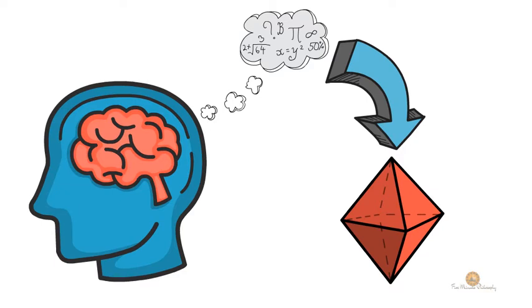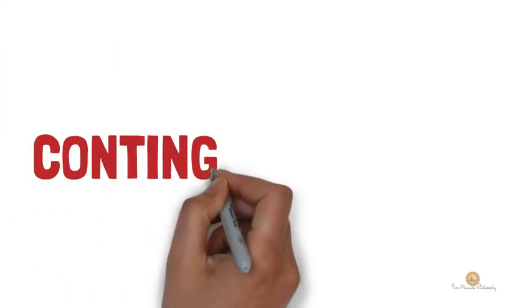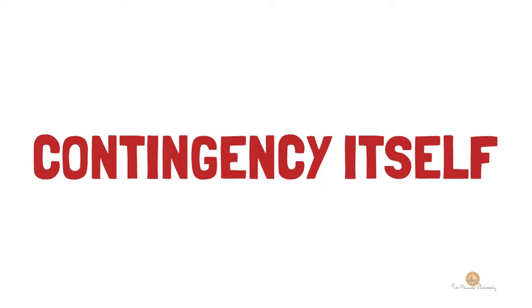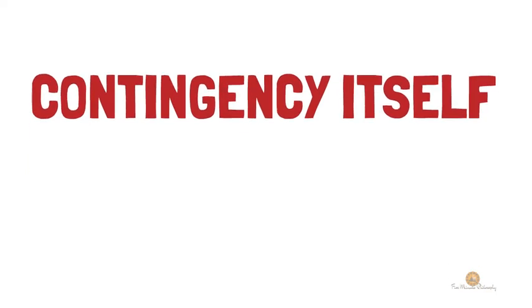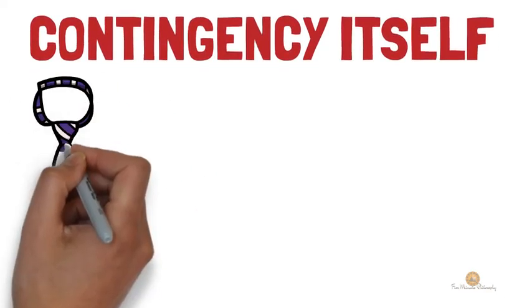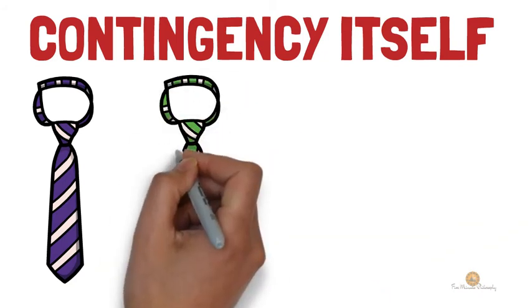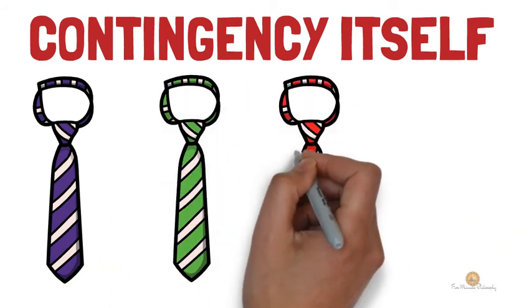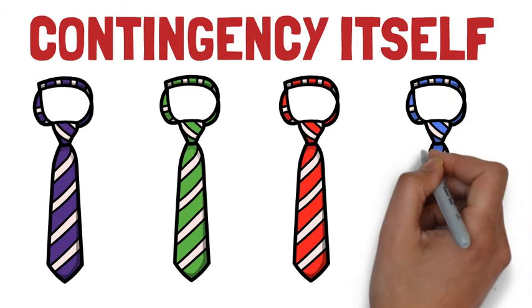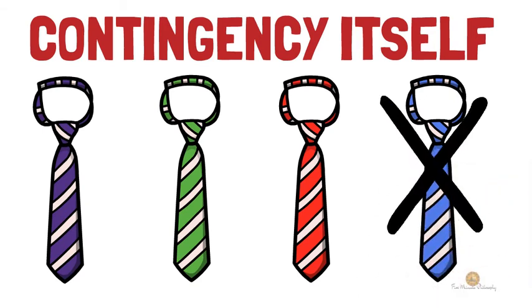And that absolute is contingency itself. Something is contingent when it doesn't need to be the way it is. My tie can be purple, or green, or it could be red, or it could not exist at all. And so my tie is contingent.